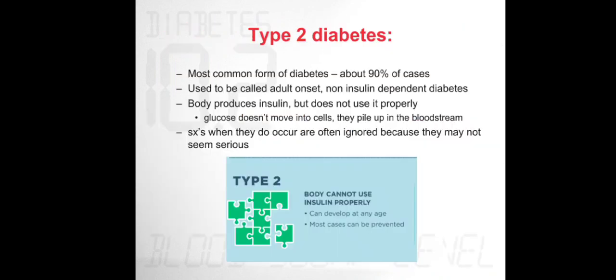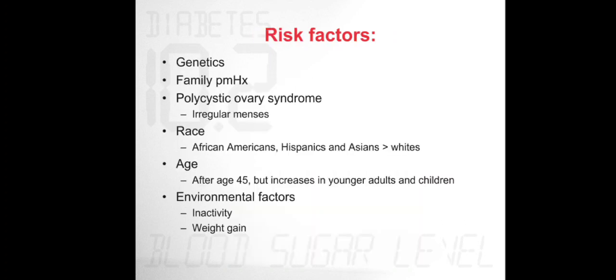Type 2 diabetes is the most common form, accounting for about 90% of cases. It was previously called adult-onset or non-insulin-dependent diabetes. In this type, the body produces insulin but does not use it properly. Symptoms may often be ignored because they may not seem dangerous. It can develop at any age and most cases can be prevented.